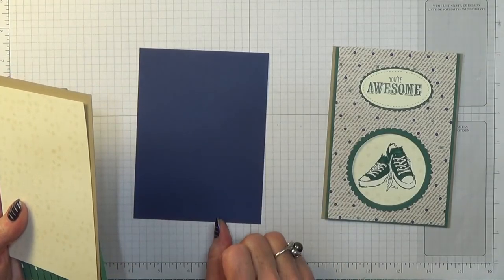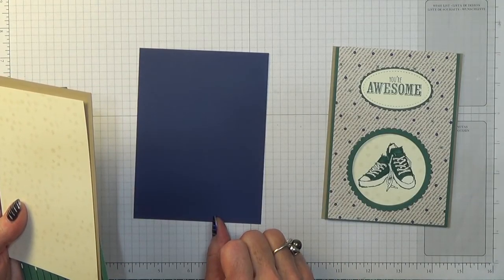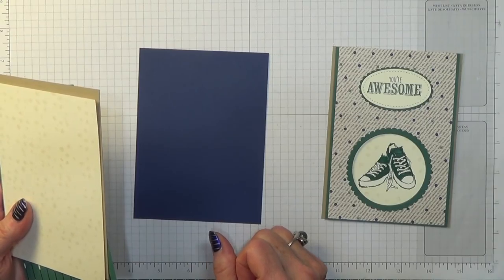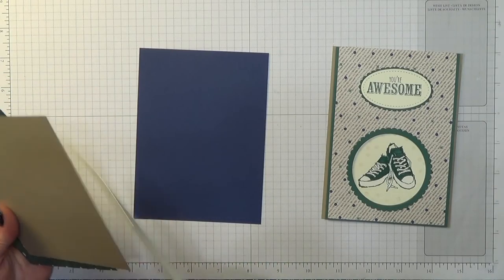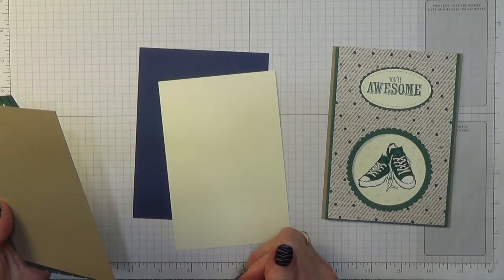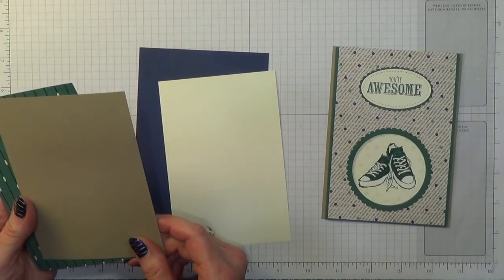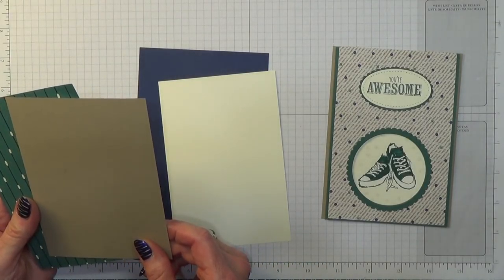A piece of Night of Navy which measures 4 1/4 inches by 5 3/4 inches, which is 10.8 by 14.6 centimeters. A piece of Very Vanilla which measures 3 7/8 inches by 5 3/4 inches, which is 9.9 by 14.6 centimeters.